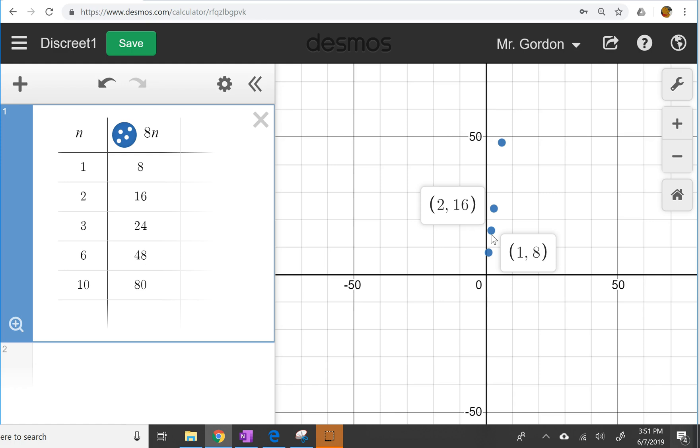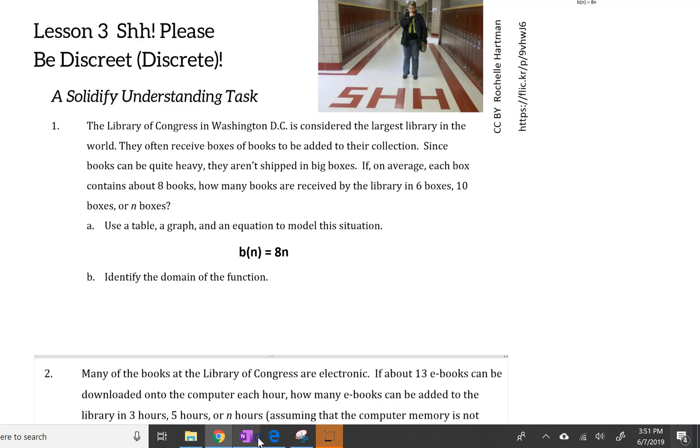because boxes come in multiples of 1. So you could have 1 box, 2 box, 3 boxes, only whole numbers. So we can now identify the domain of this function. So this equation here is the equation that we just used to make the table b of n, where b represents the number of books and n represents the number of boxes, equals 8n. So the domain is going to be the set, and that's what this symbol here indicates, the set,